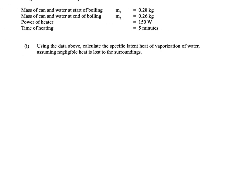So there's a question you're given that the mass of the can of water at the start of boiling is 0.28 kilograms and at the end of boiling is 0.26 kilograms. You're given the power of the heater, that's 150 watts, and you are heating it for five minutes.